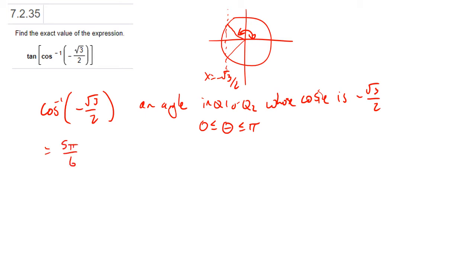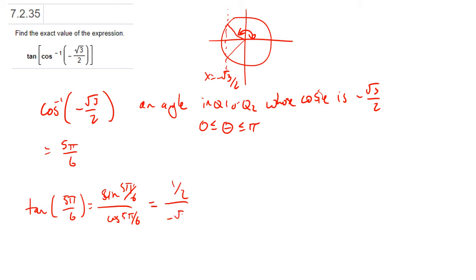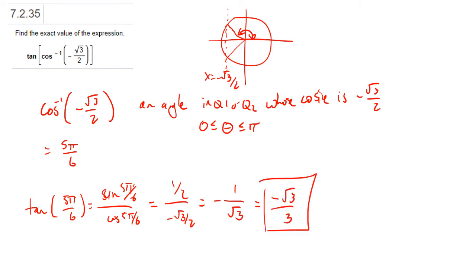So then we just have to take the tangent of 5 pi over 6. It's going to be the sine of 5 pi over 6 over the cosine of 5 pi over 6 — I'm using this because I don't remember reference values for tangent off the top of my head, but I do for sine and cosine. So this is 1/2 over minus root 3 over 2, which simplifies down to 1 over root 3 with a negative sign, which would typically be written as negative root 3 over 3.